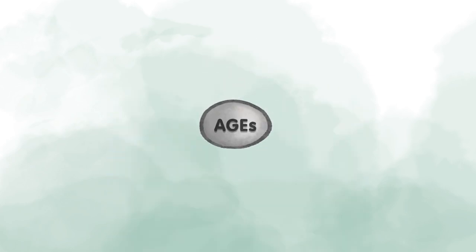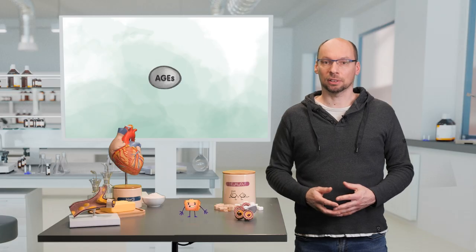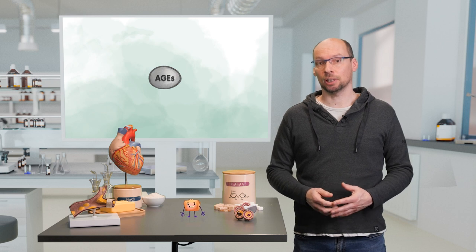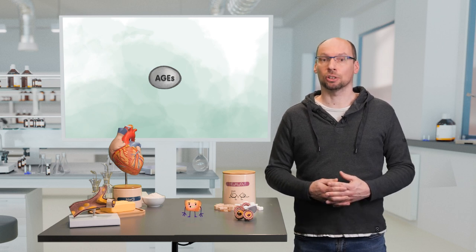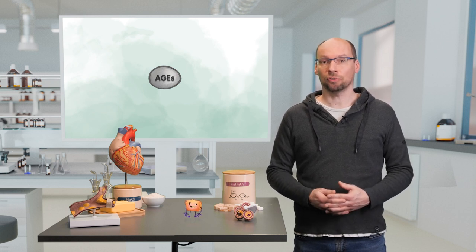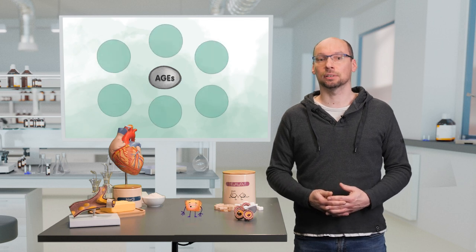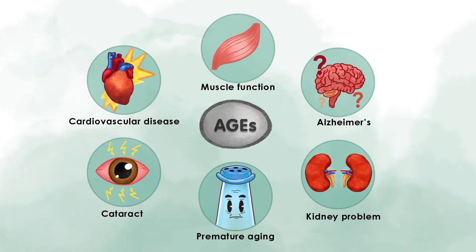AGEs are not only bad for our cardiovascular system, but also affect nearly every type of cell and molecule in the body, and are thought to be one factor in aging and age-related chronic diseases, such as diabetes, neurodegenerative Alzheimer's disease, the degeneration of the macula, and the formation of a cataract in our eyes, to name a few.